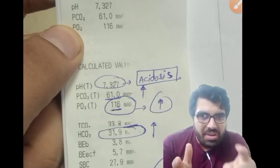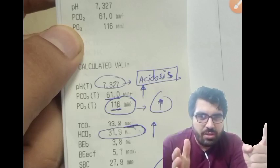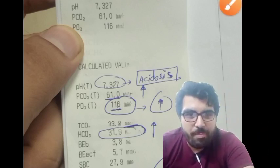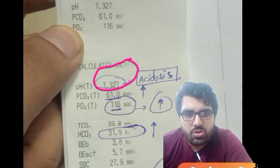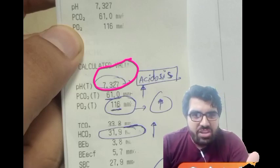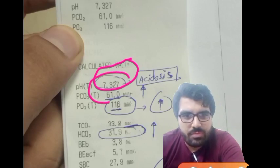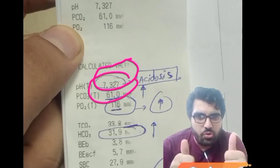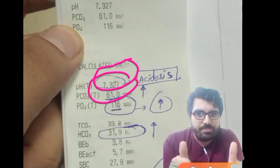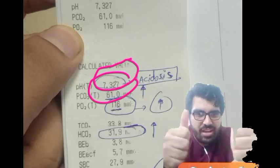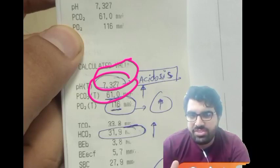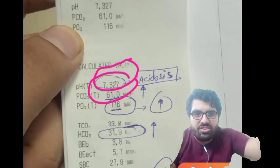So the first thing is you look at the pH. The pH is acidotic. Next thing is you look at the CO2. So you look at both pH and CO2. If the pH and CO2 are both in the same direction, if they both are increasing or if they both are decreasing, then the problem is metabolic. If they are moving in opposite directions, the pH and the CO2 moving in opposite direction, the problem is respiratory.